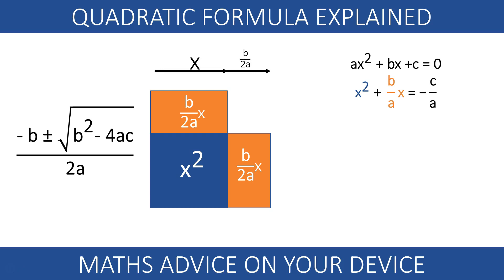This means that in order to make the perfect square, we need to add a green square with sides b over 2a. This green square has an area of b over 2a squared.